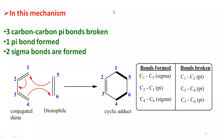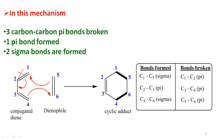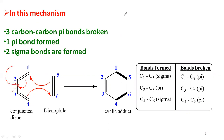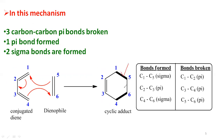In the mechanism, three carbon-carbon pi bonds are broken: the C1–C2 pi bond, the C3–C4 pi bond of the conjugated diene, and the C5–C6 pi bond of the dienophile. Two new sigma bonds are formed between C1 and C5, and between C4 and C6. One new pi bond is formed between C2 and C3.